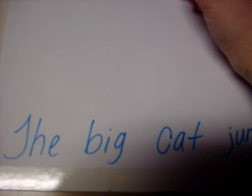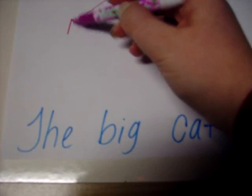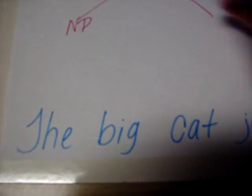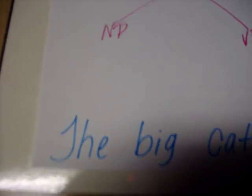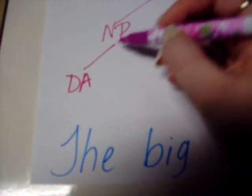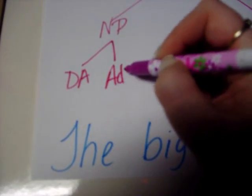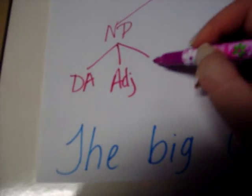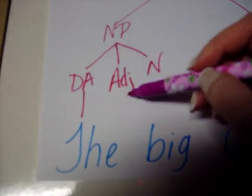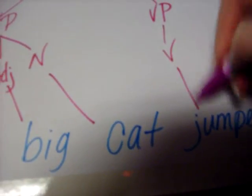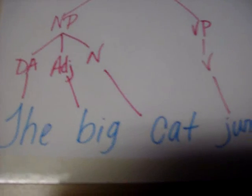In this example, we have 'the big cat jumped.' Let's diagram. We have our sentence with both parts: a noun phrase and a verb phrase. In our noun phrase, we have the definite article, and this time we have an adjective and the central noun. So we have 'the big cat,' and we still only have just the verb in the verb phrase. The big cat jumped.